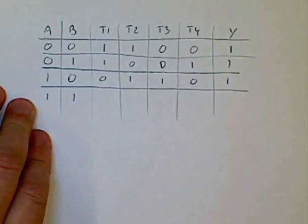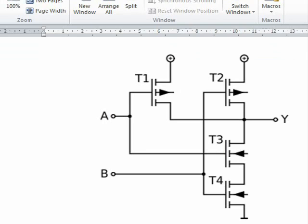If, in the case where both outputs are high, we can see that if A is high, then T1 is going to be off, and T3 is going to be on. If B is high, T2 is going to be off, and T4 is going to be on.